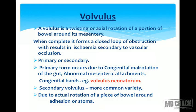Volvulus is a twisting or axial rotation of a portion of the bowel around its mesentery. When complete, it forms a closed loop obstruction which results in ischemia secondary to vascular occlusion. It can be primary or secondary. Primary form occurs due to congenital malrotation of the gut, abnormal mesenteric attachments, and congenital bands — for example in volvulus neonatorum. Secondary volvulus is more common and occurs due to actual rotation of the bowel around adhesions or stoma.